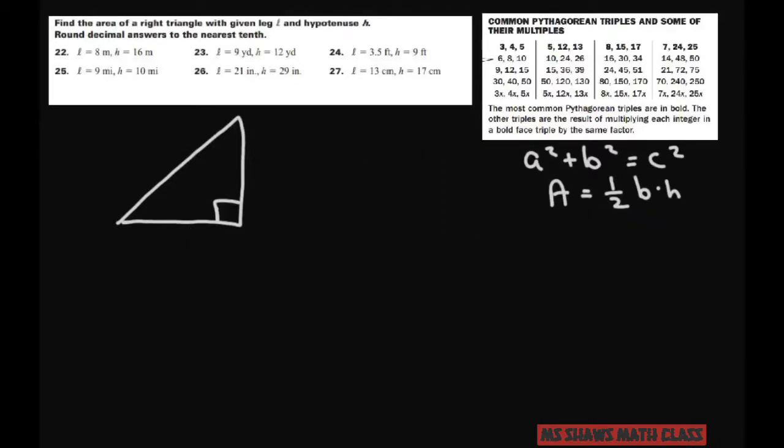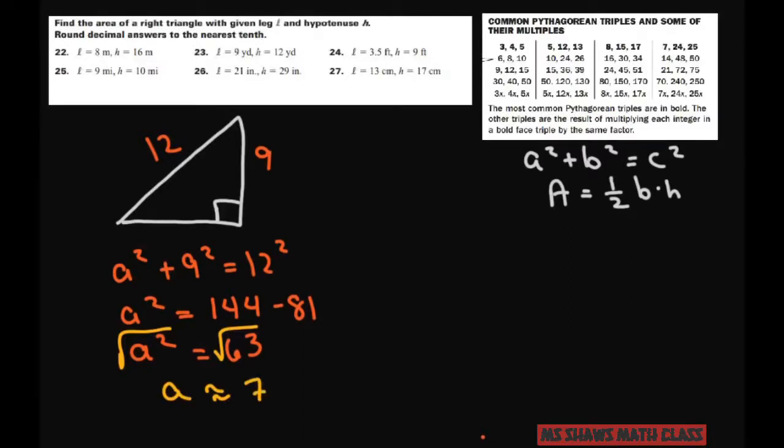Now the next one, we're going to have 9 and 12. So we're going to do A² + 9² = 12². So A² equals 144. And we're subtracting 9², which is 81. So 144 minus 81 gives you 63. Take the positive square root of both sides. So it's going to be a little less than 8. So square root of 63 is approximately 7.94.